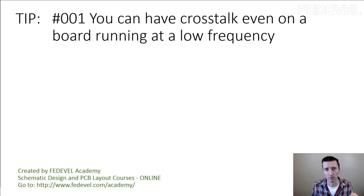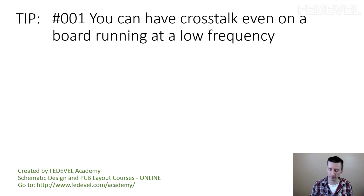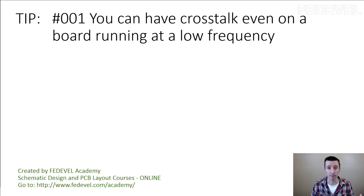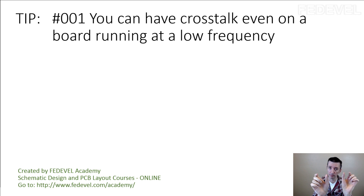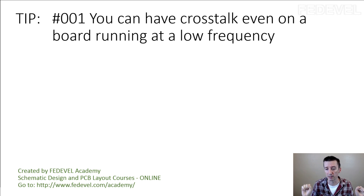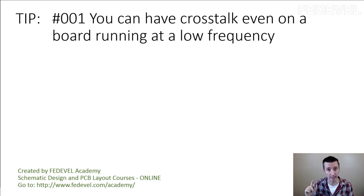This noise sometimes can be so high that it can change the level on the reset signal — which means the crosstalk can be so high that it can reset your board, changing the reset level from high to low. The point of this tip is that this is not going to happen only on very high-speed boards. It can happen on your 10 MHz microcontroller board, it can happen even on a GPIO pin. Many times what is very visible on boards designed by someone starting with PCB layout is random interrupts — this is exactly crosstalk.